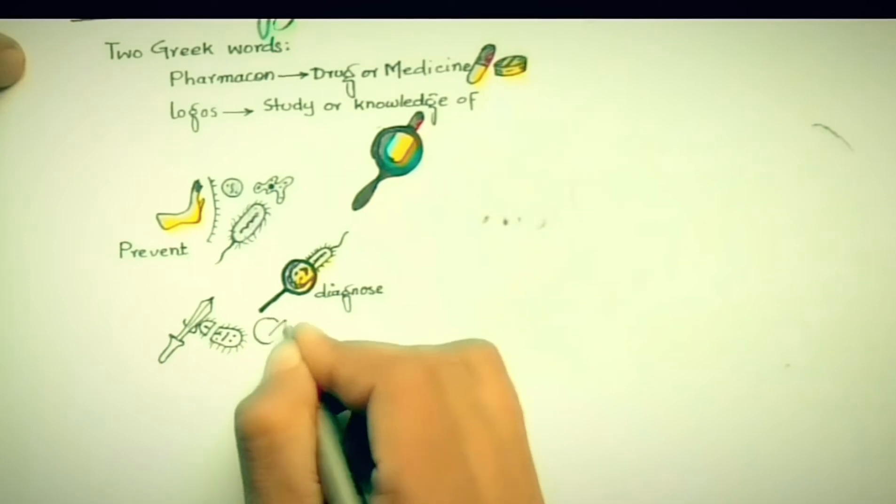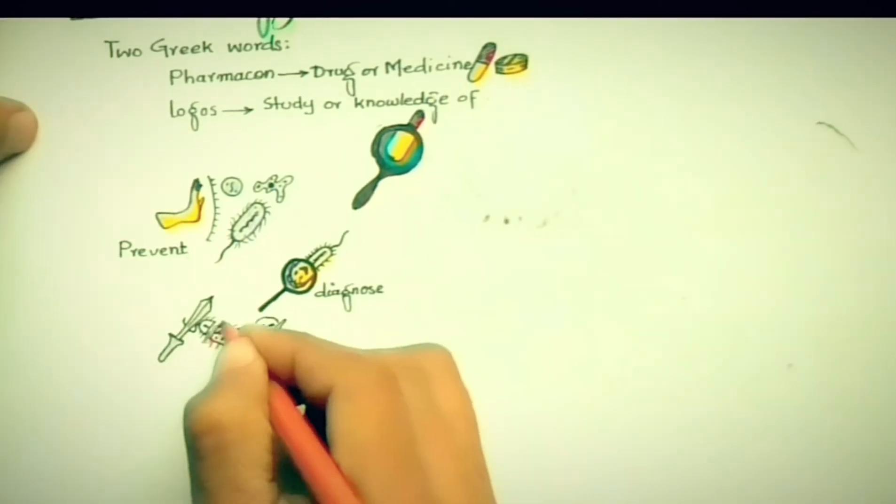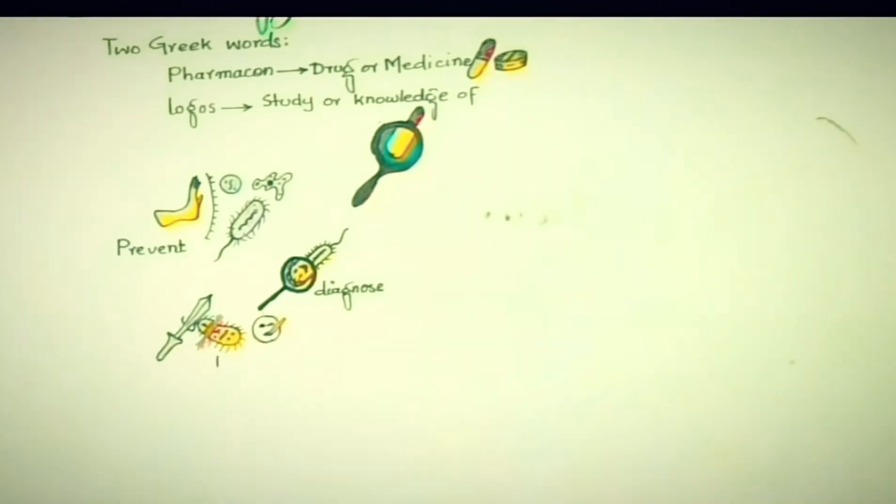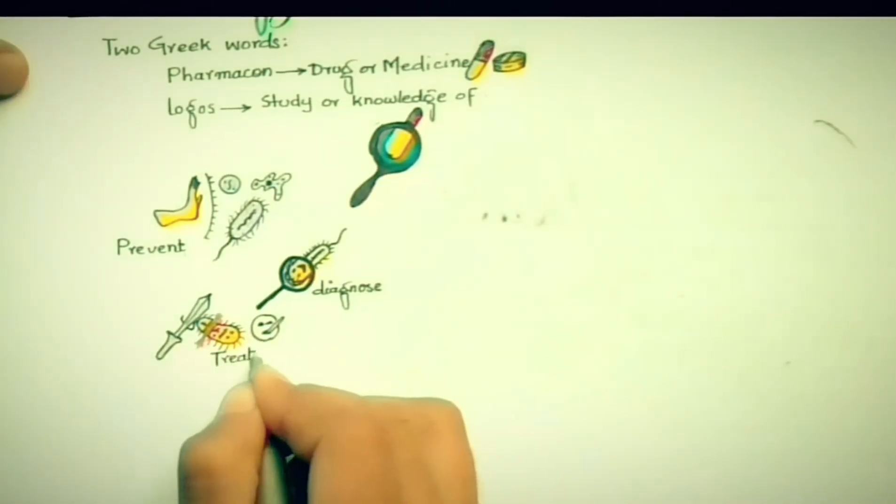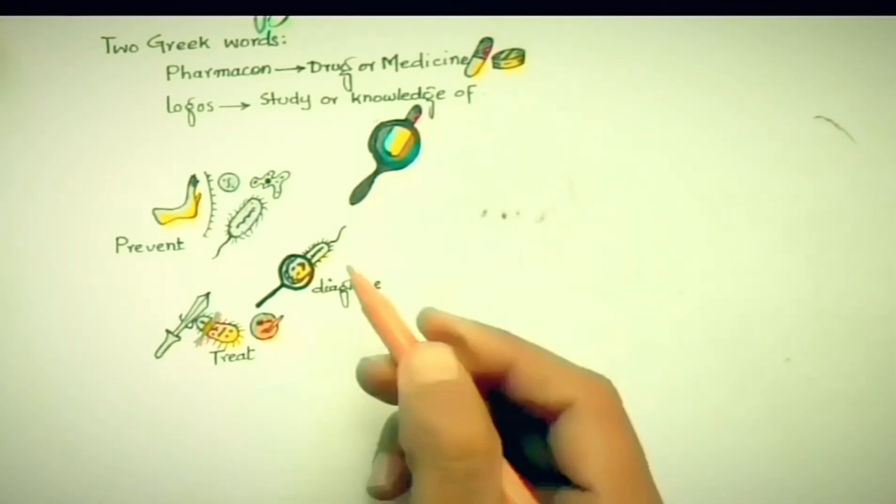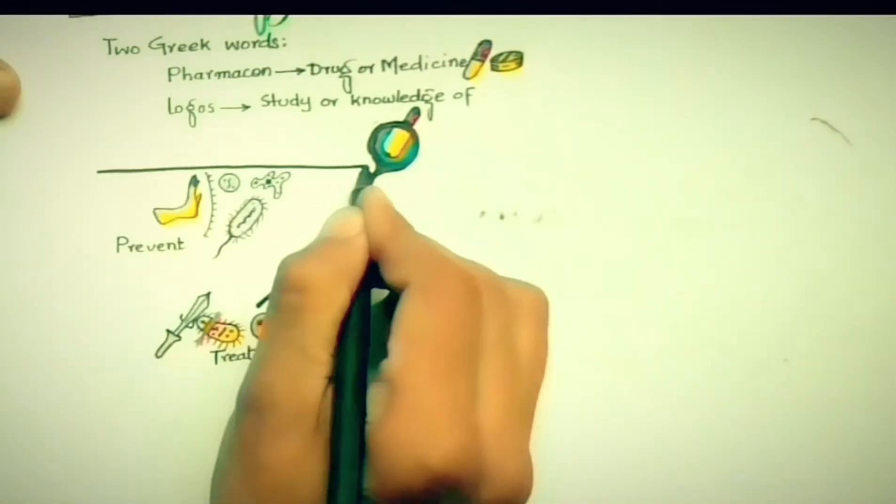But this definition of pharmacology doesn't cover contraceptives and drugs used for symptomatic treatment, like insulin used for IDDM and analgesics used to relieve pain without treating the actual cause of disease.